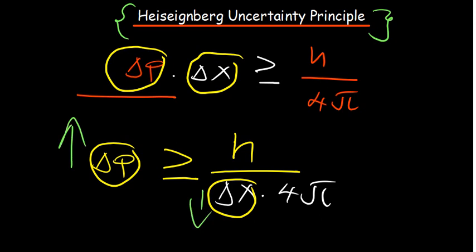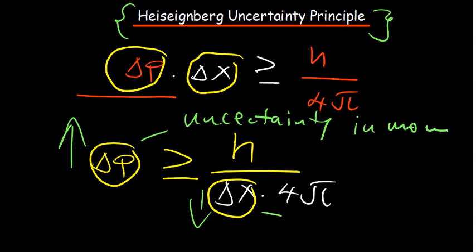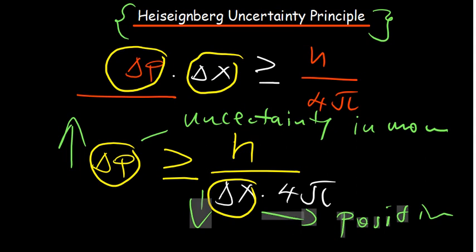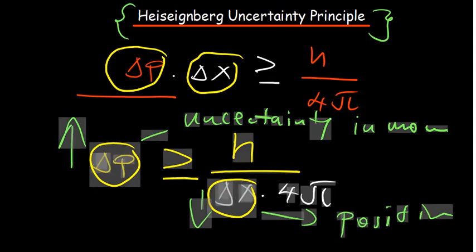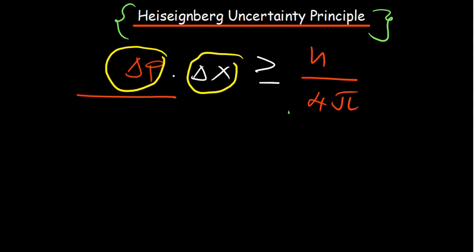The more you know about momentum, the less you know about position. ΔP denotes uncertainty in momentum and ΔX denotes uncertainty in position. What is important is for you to be able to remember that formula and state the Heisenberg uncertainty principle. Momentum is basically the product of mass and velocity, as you discuss it in physics.